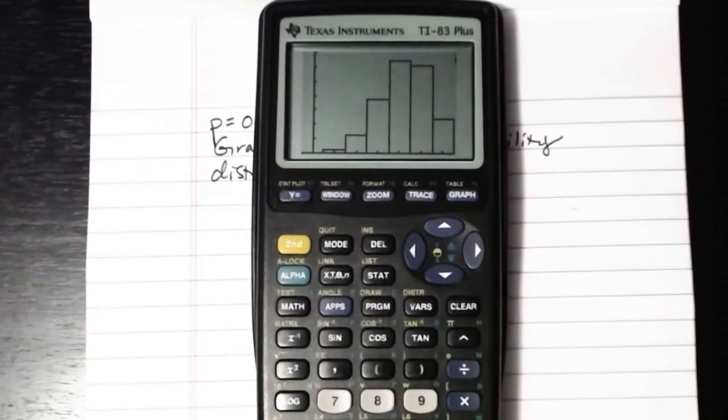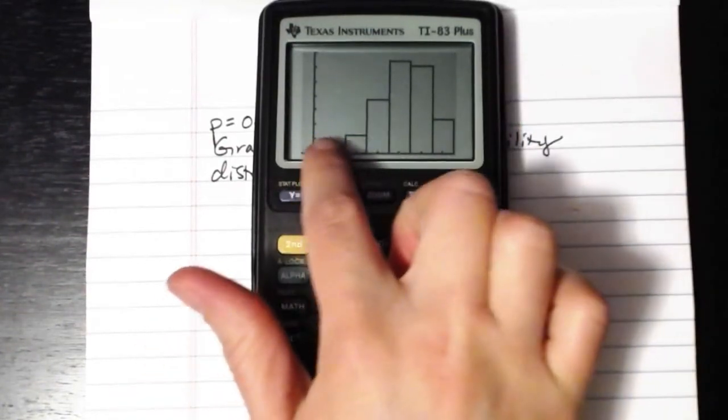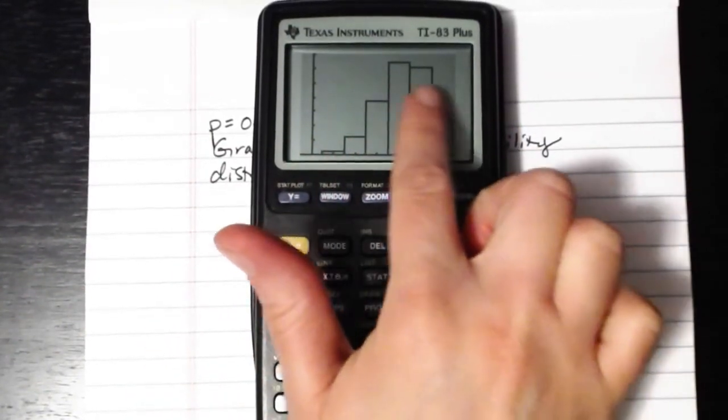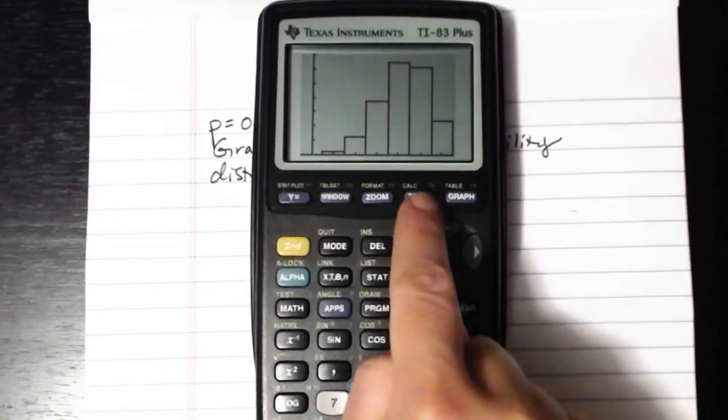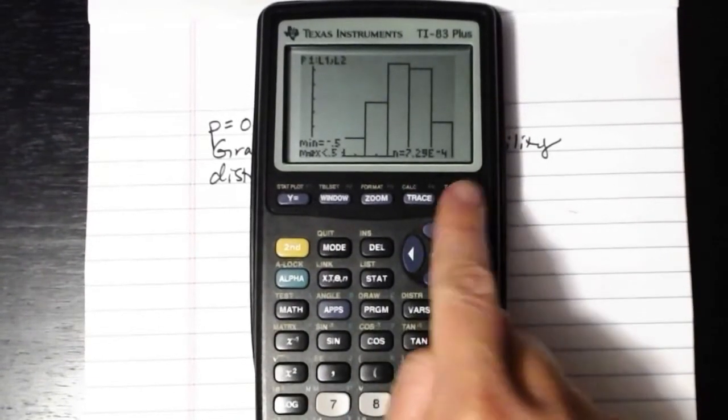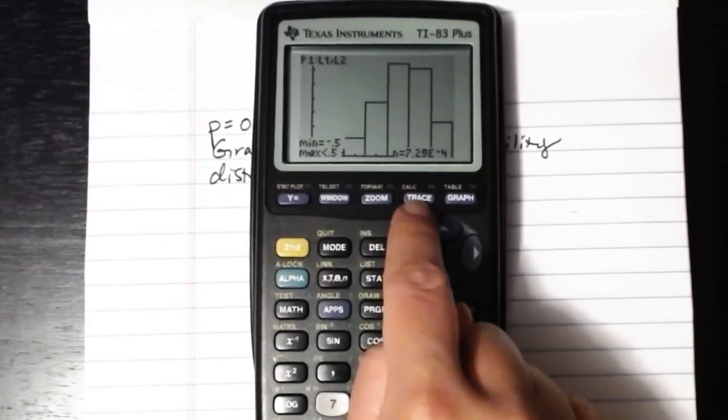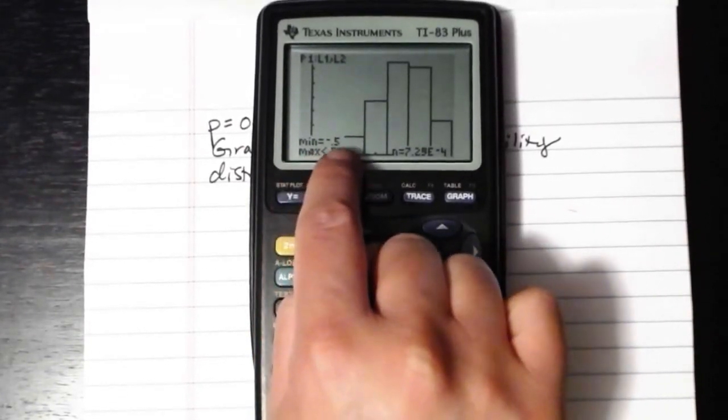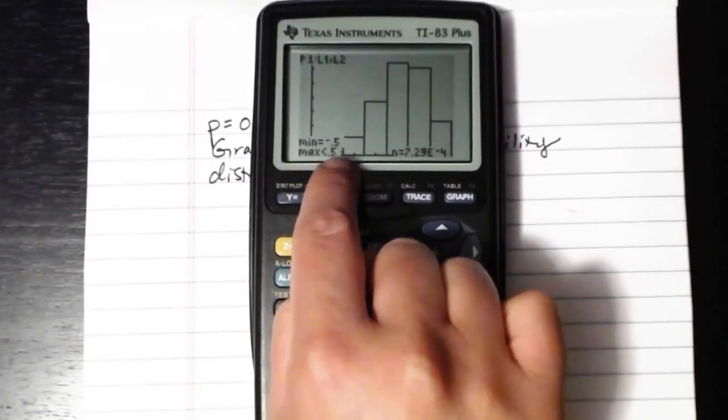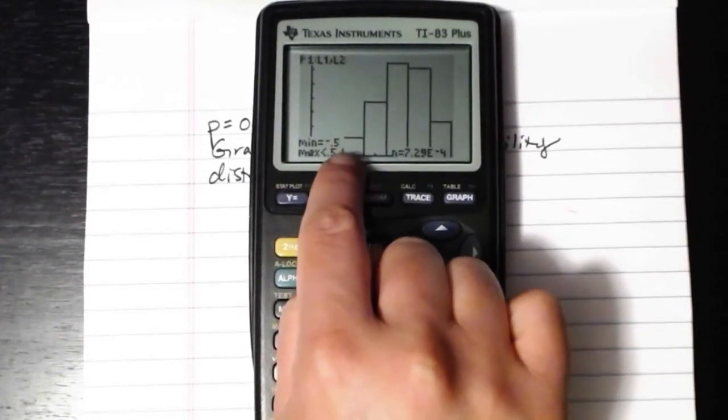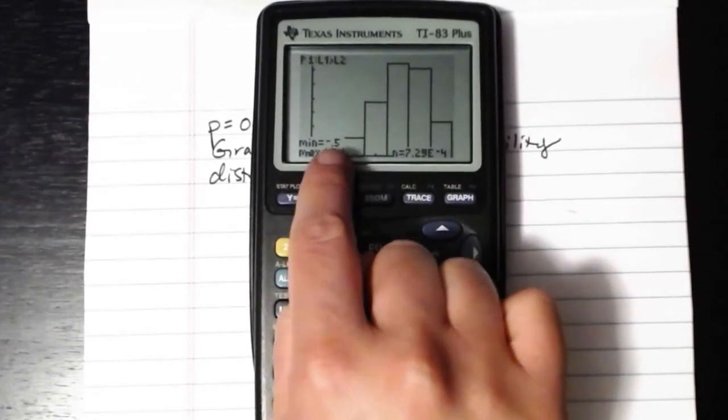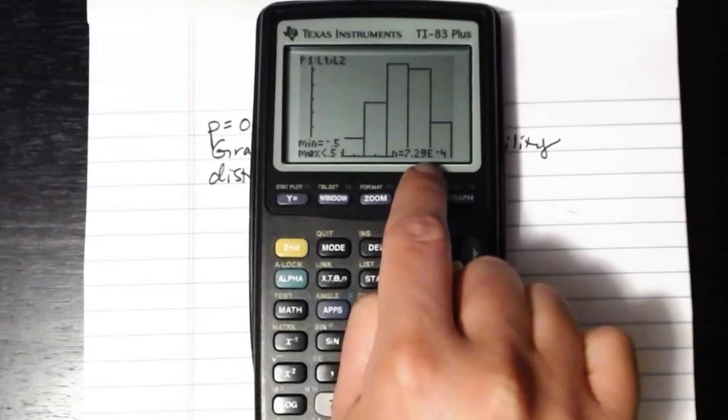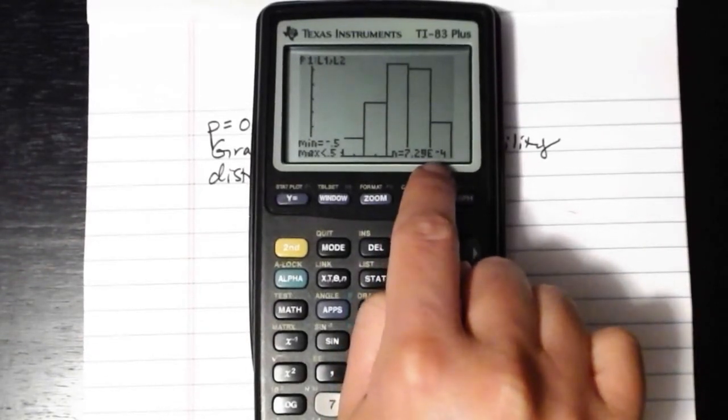And there is our histogram of our probability distribution. If you want to see the values that are associated with any of the actual bars themselves, you can press the trace key, which is right next to graph, here it is trace. And then initially it'll put the blinking cursor on the very first class, it'll tell you that goes from negative 0.5 to 0.5, so it's centered at 0, so that would represent 0 successes, and it has 7.29 times 10 to the negative 4 as its probability.